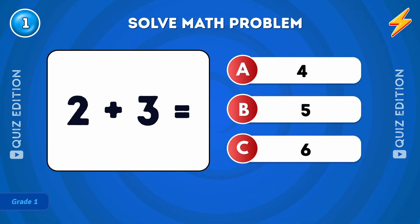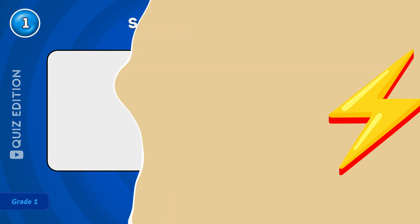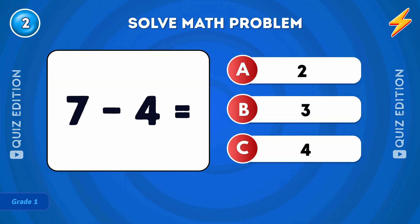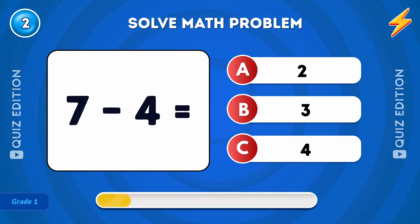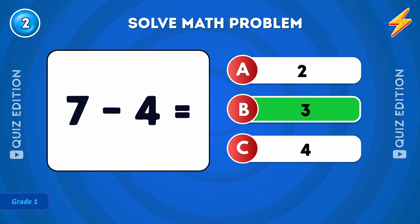First question. What is 2 plus 3? The answer is 5. What is 7 minus 4? The answer is 3.